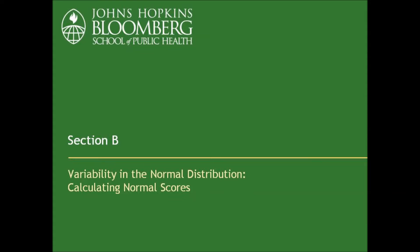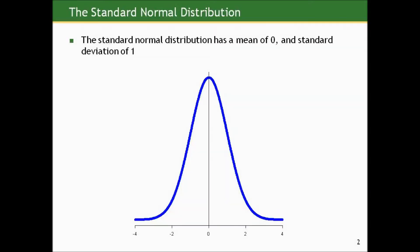Let's talk about some very special properties of the normal distribution in terms of the relationship between the mean and the variability, and we'll talk about calculating something called normal scores. Let's first define something called the standard normal distribution. The standard normal distribution has a mean of zero and a standard deviation of one.